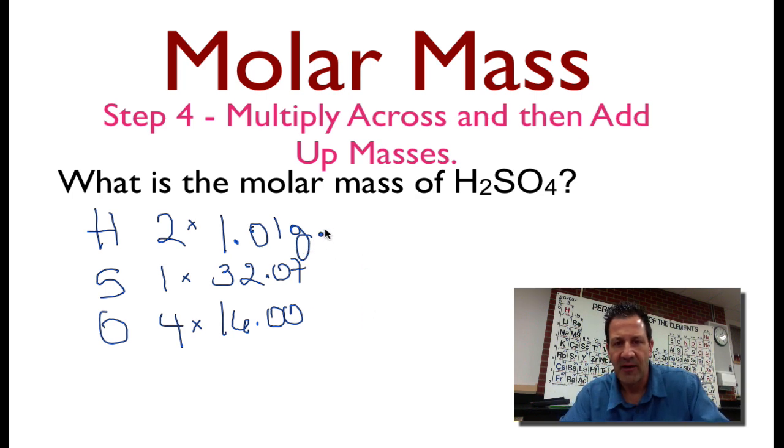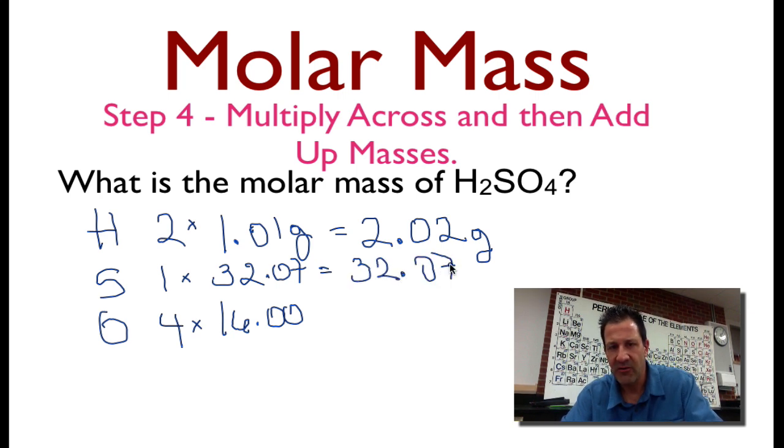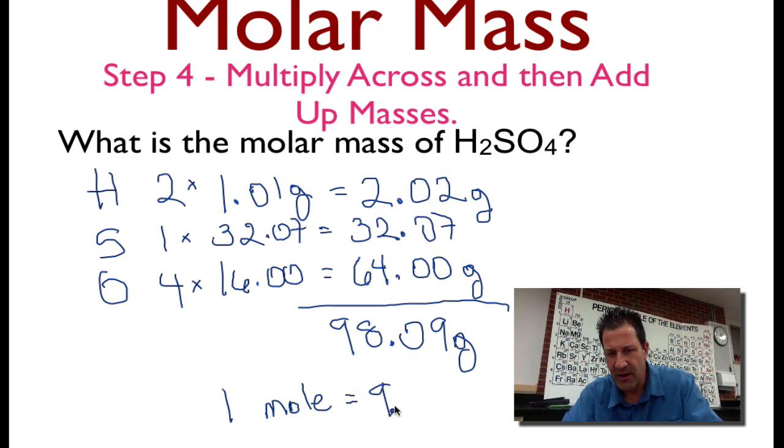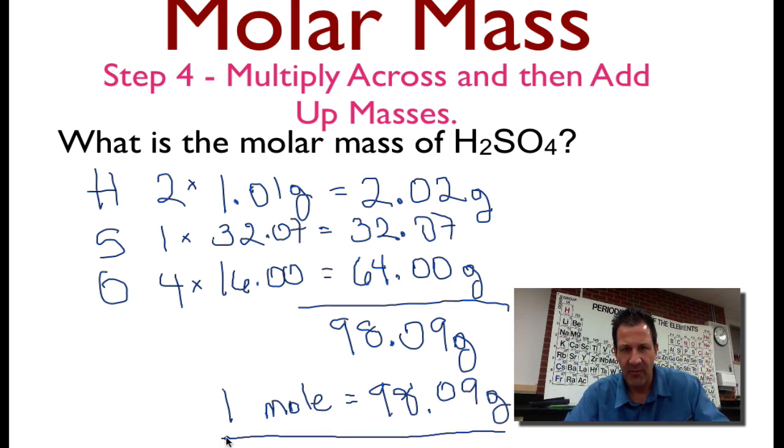Now I'm going to multiply across, and then I'm going to add them up. So two times 1.01 is 2.02 grams. This is one times 32, so I'm just going to write down 32.07 grams, and four oxygens gives me 64.00 grams. So I'm going to add them up, and I end up with the molar mass of sulfuric acid is 98.09 grams. One mole is equal to 98.09 grams. That is the molar mass for sulfuric acid.